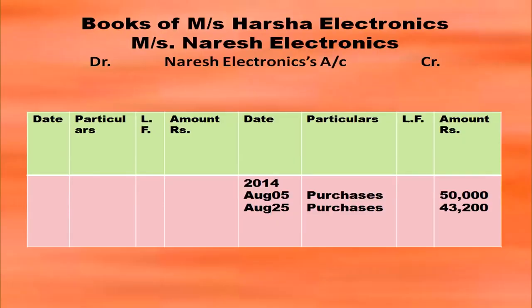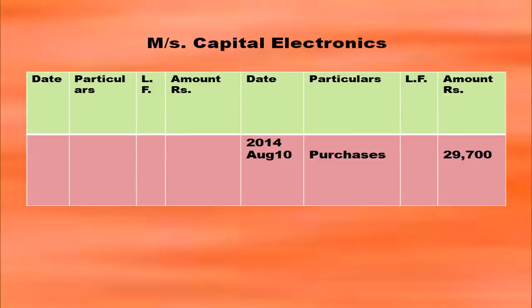How do you post after writing the entries in the purchases book? You have already written Naresh Electronics — that is, Harsha Electronics purchased materials from Naresh Electronics. So you have to post in the Naresh Electronics account. In Messrs Naresh Electronics account, on the credit side you will post 'by purchases' with the date written in the date column. On August 5th, purchases amounting to 50,000. On August 25th also Harsha Electronics purchased goods from Naresh Electronics, so on the credit side post 'by purchases' 43,200.